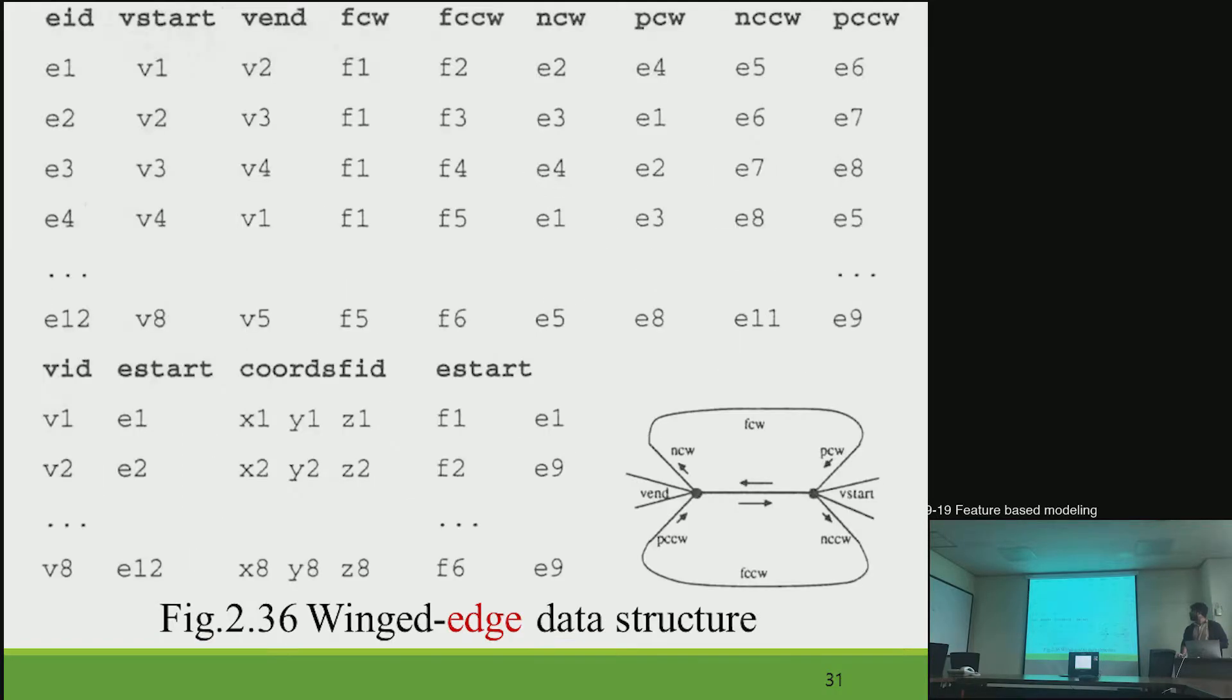And next data structure is very complicated. And it is winged edge data structure. So why do you see it? It is, you can see it as edge-based data structure.